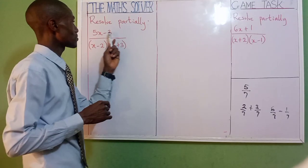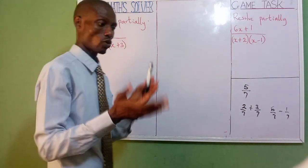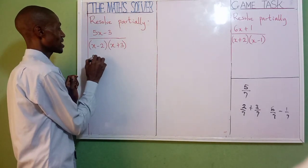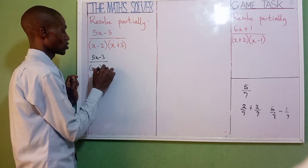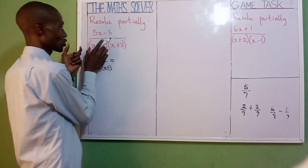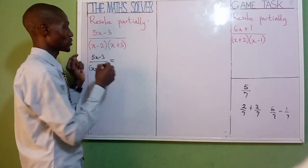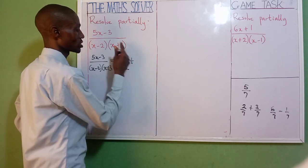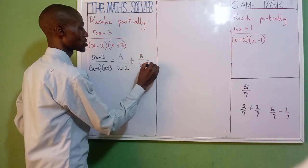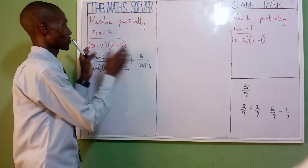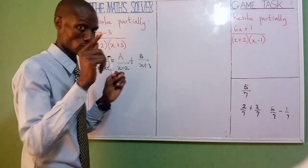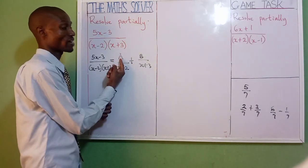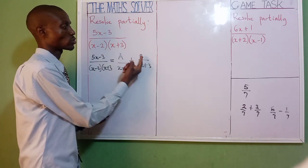Now look at this question. You have 5x minus 3 divided by x minus 2, then x plus 3. The first method — the initial method. Let's split as the method. We have 5x minus 3 over (x minus 2)(x plus 3), equal to, now to split it: we have a first bracket and a second bracket. The power of your x is 1. We have A over x minus 2, plus B over x plus 3. Because it's having power of 1, that's why it's only having A for the first and B for the second.